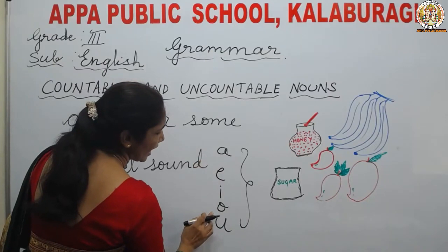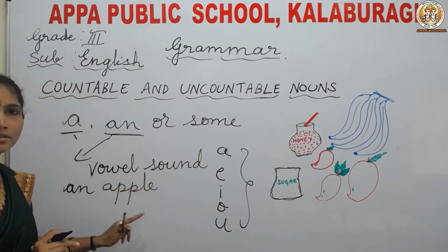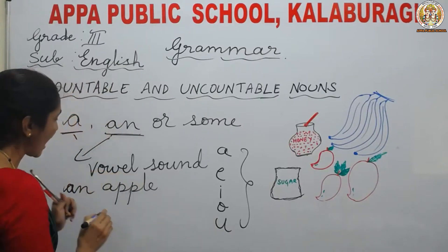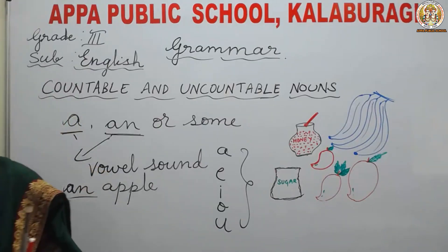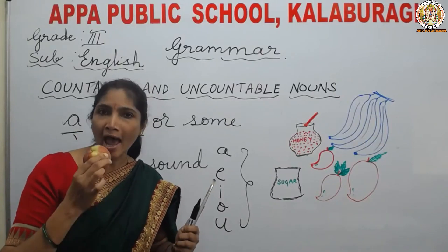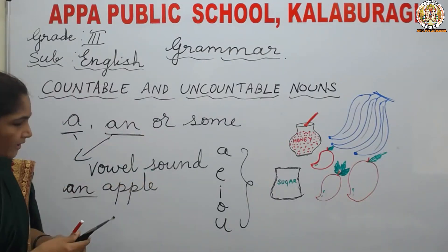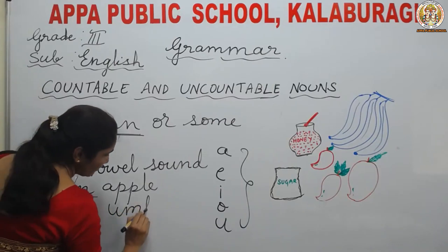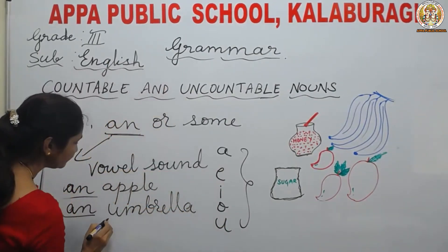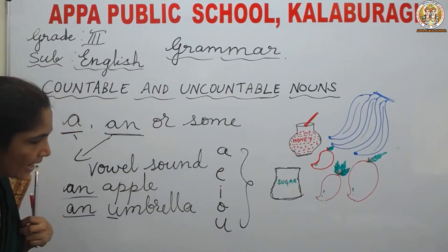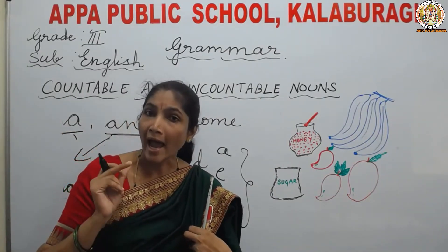These are vowels — A, E, I, O, U. For example, an apple. Apple — we have one apple, it is countable, but we have to use an apple. We should not say a apple; we have to say an apple. What do I have in my hand? I have an apple. In the same way, an umbrella. An umbrella. Then we have an egg. When we have one egg, we have to say it as an egg.